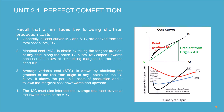Recall that a firm faces the following short run production costs. Generally, all cost curves — MC and ATC — are derived from the total cost curve (TC). Marginal cost (MC) is obtained by taking the tangent gradient of any point along the TC curve. MC slopes upwards because of the law of diminishing marginal returns in the short run. Average total cost (ATC) is drawn by obtaining the gradient of the line from the origin to any point on the TC curve, showing the per unit costs of production.